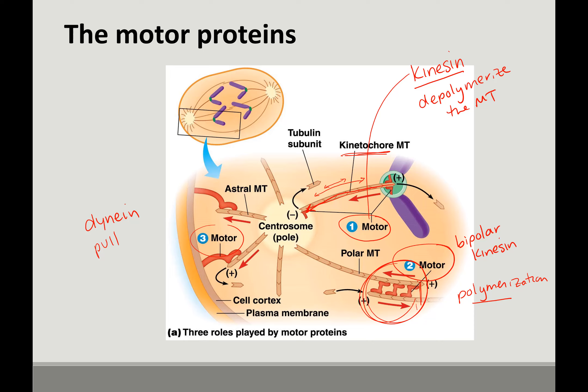The third motor proteins are dynein, acting on the astral microtubules. They pull on the spindle poles — as they depolymerize, they keep pulling the centrosome closer and closer to the plasma membrane. So you have this push-pull of the centrosomes and chromosomes working together so the cell can eventually undergo division.